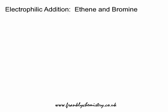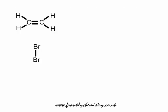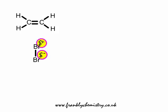Electrophilic addition. Here we look at the electrophilic addition reaction involving ethene and bromine — Br2, a homonuclear diatomic molecule that is non-polar. There is the ethene molecule with its carbon-carbon double bond made up of a sigma and pi bond. We have a region between the two carbon atoms with four electrons concentrated, described as an area of high electron density.